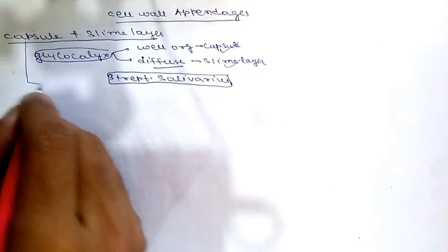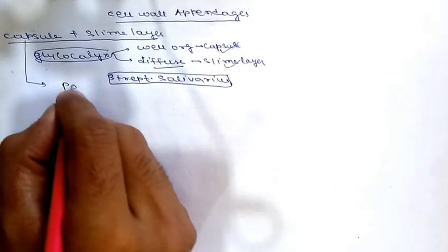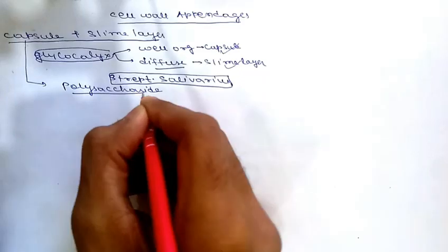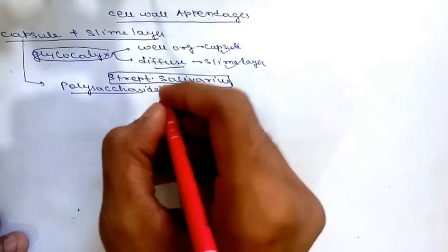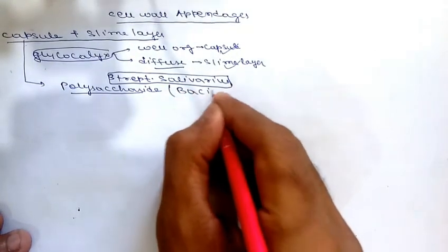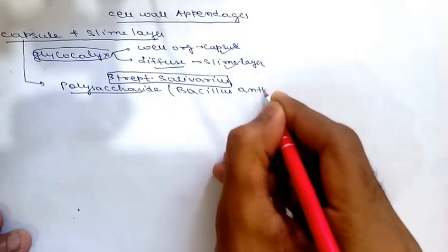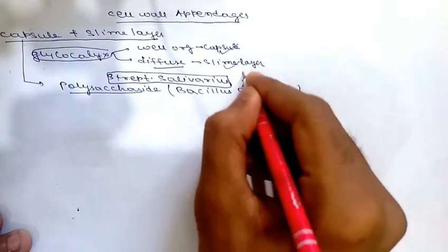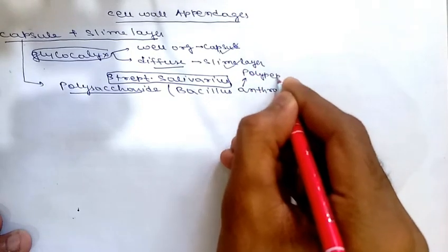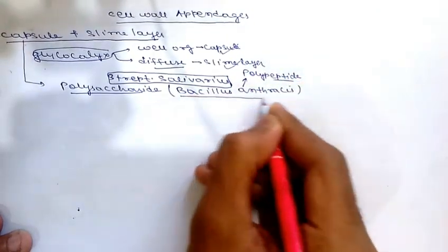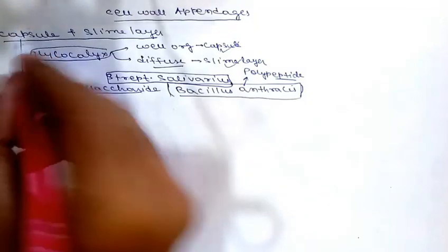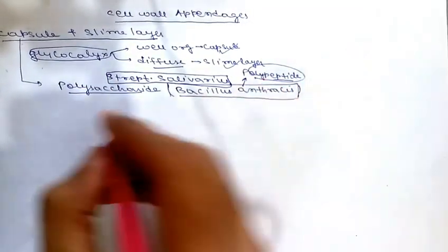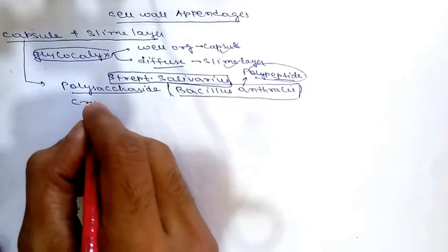Most bacterial capsules are polysaccharide in nature, with one or two exceptions. One important exception is Bacillus anthracis, in which the capsule is polypeptide in nature. Capsule is also seen in some fungi — one example is Cryptococcus neoformans.